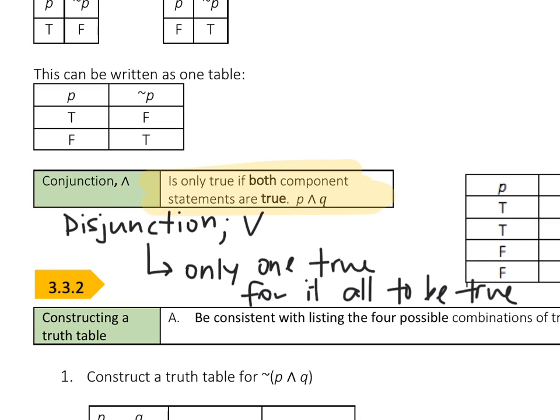One thing I want to note: for a disjunction — this OR statement — in order for that truth value to be true, only one, P or Q, needs to be true, and then the whole thing is true.